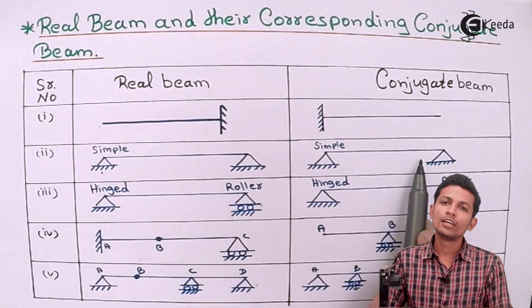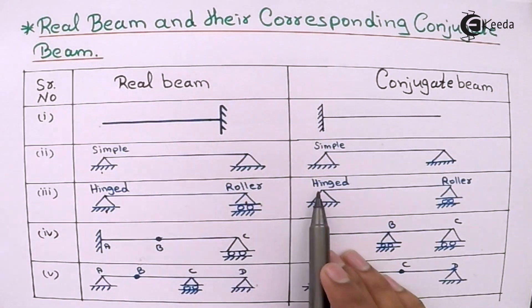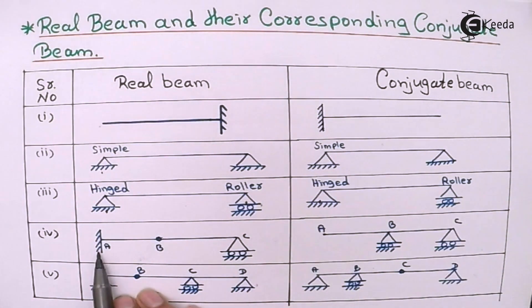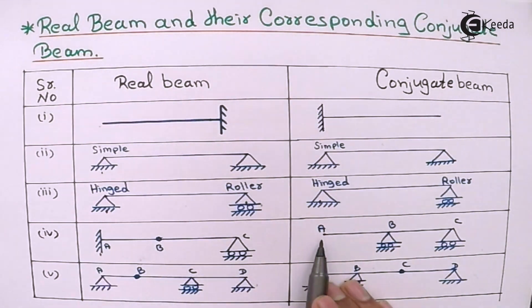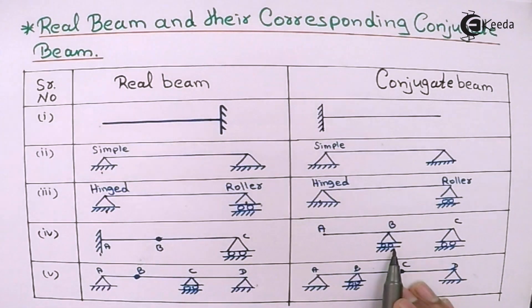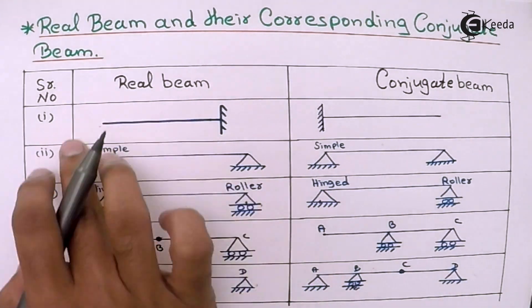In a real beam, if there is a hinge and roller, in the conjugate beam there is also a hinge and roller. Where a real beam has an internal hinge, the conjugate beam will have a roller or simple support at that location. These are the types of beam support transformations that commonly appear in exams.